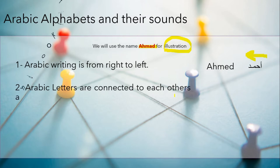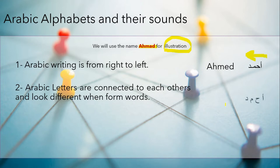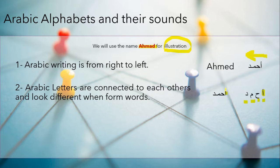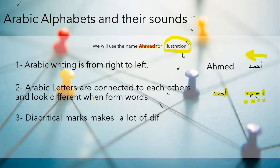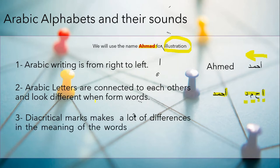The second fact we need to know is that Arabic letters are connected to each other and look really different when we are forming a word using them. The name Ahmed, without being connected, looks like Alif, Ha, Mim, Dal — like this. When we connect it, it will look like this. Alif is the same, Ahmed is the same — but why is the Alif not connected to the Ha? This we are going to learn in the coming slides.